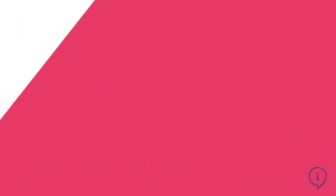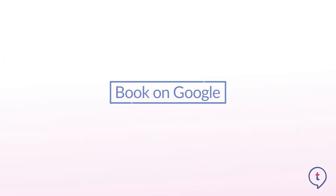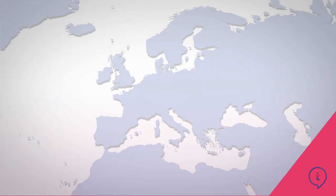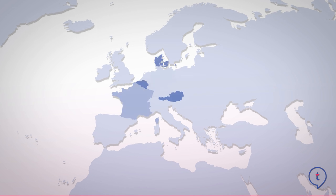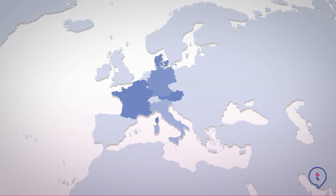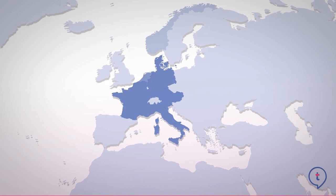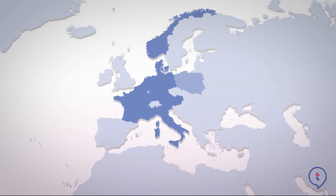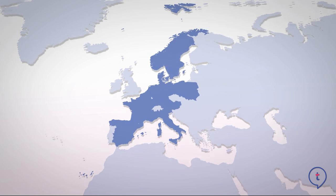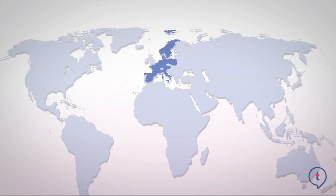We've also created an infographic that will help visualize this. Right now I want to talk about Book on Google. Towards the end of 2018, Google released the Book on Google feature across a range of new markets, launching in a number of European countries as well as in Canada.